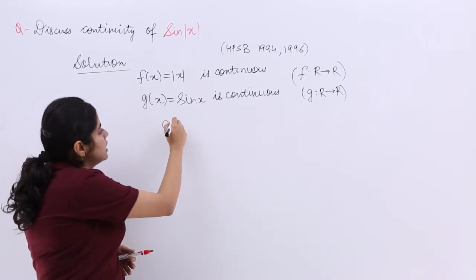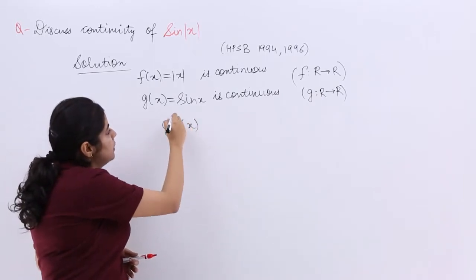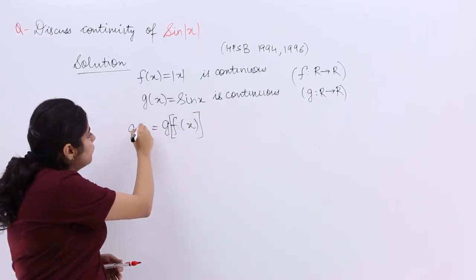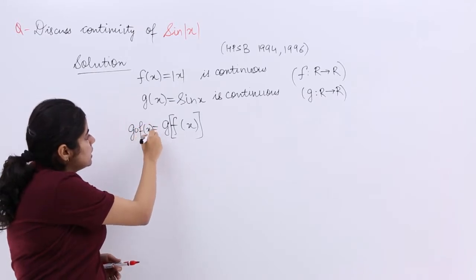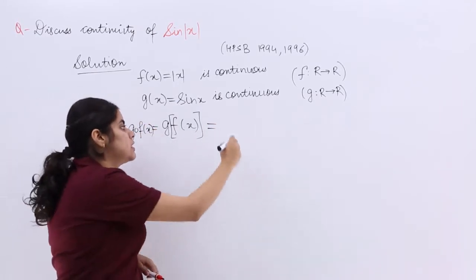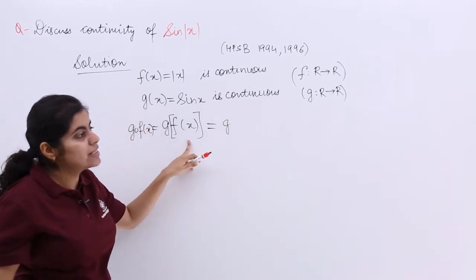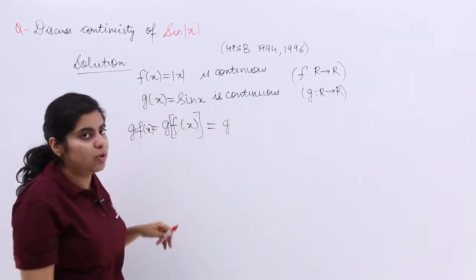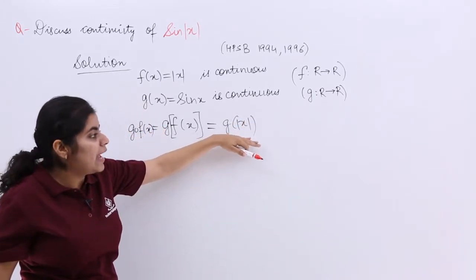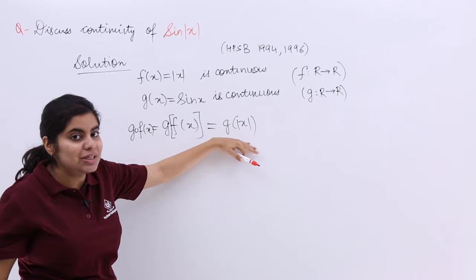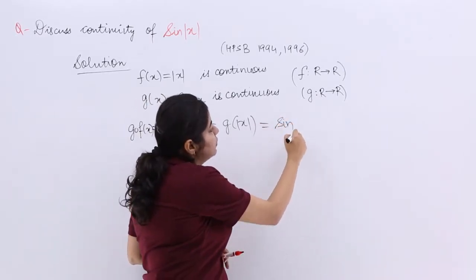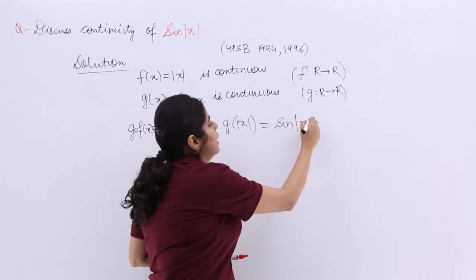Similarly, since these functions are explicitly continuous, their composition is continuous. What is g(f(x))? Simply put the f(x) value. f(x) is |x|, so it is g(|x|). That means wherever you have x in g, substitute it by |x|. So wherever you have x after sin, substitute it by |x|.